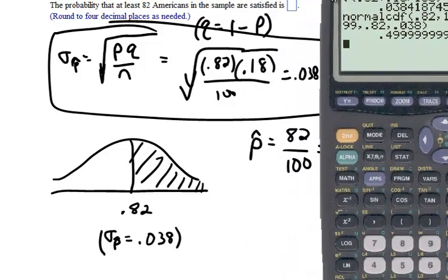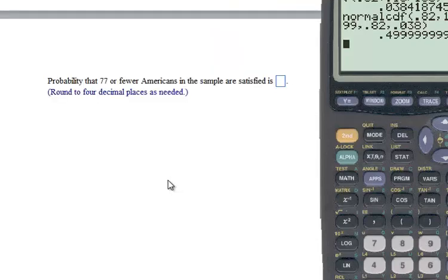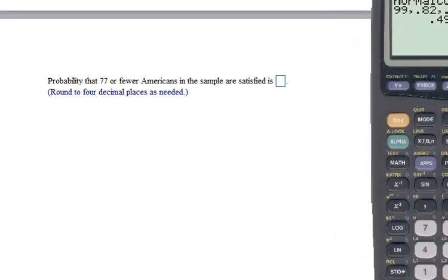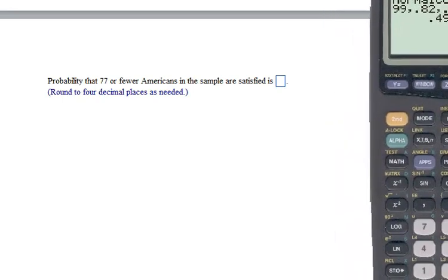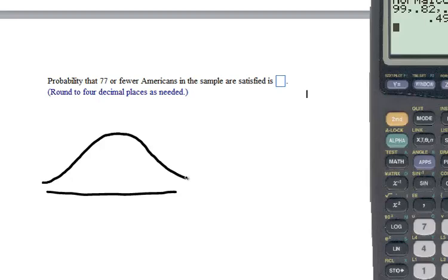Let's look at part C. Part C reads, find the probability that 77 or fewer Americans in the sample are satisfied. Again, draw a curve out. I cannot emphasize that enough. It does take a few extra seconds, but this is how we think through these problems. You will not regret it. What's our mean proportion? 0.82.